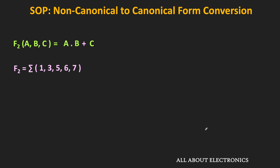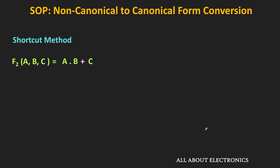Now let us see the shortcut method for this conversion. Using the same example, in the first term one variable is missing and in the second term two variables are missing. In place of each missing variable, we write X. So the first term becomes A·B·X and the second term becomes X·X·C. If the variable appears in true form, its value is 1; if complemented, its value is 0; and X remains as X.